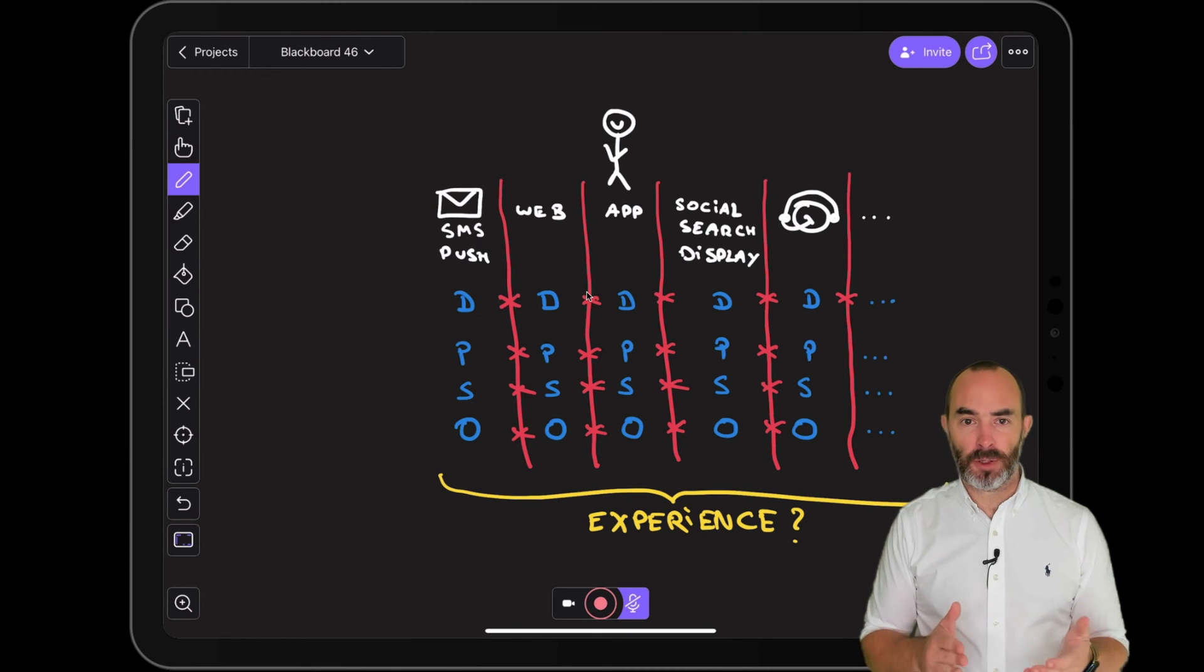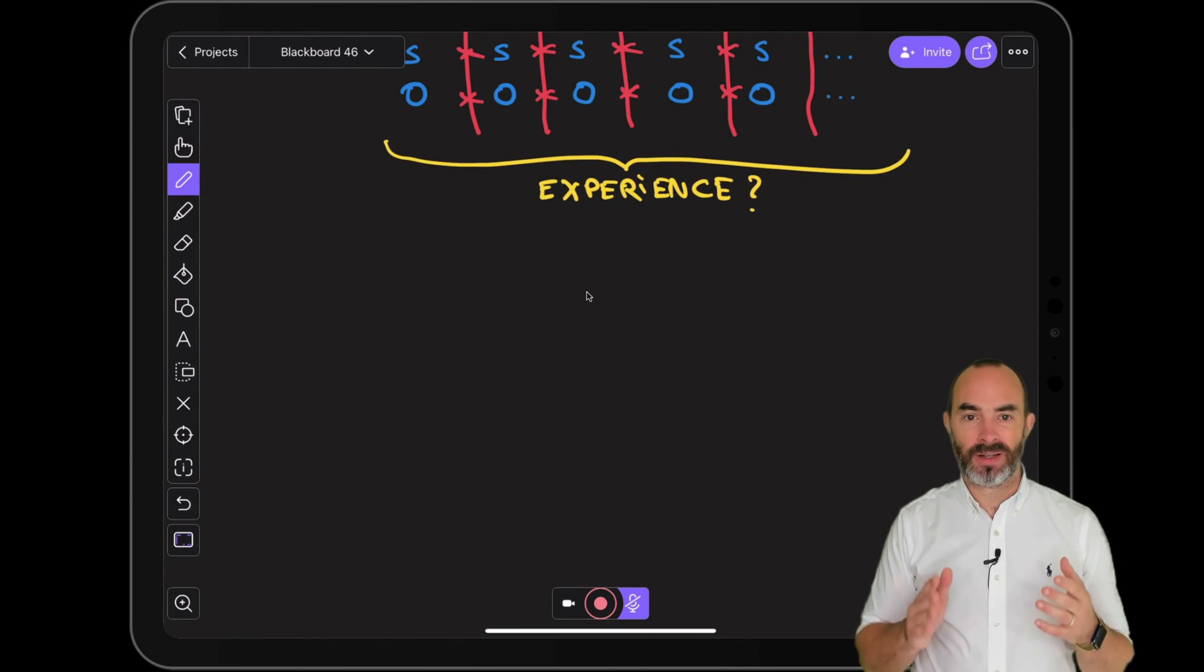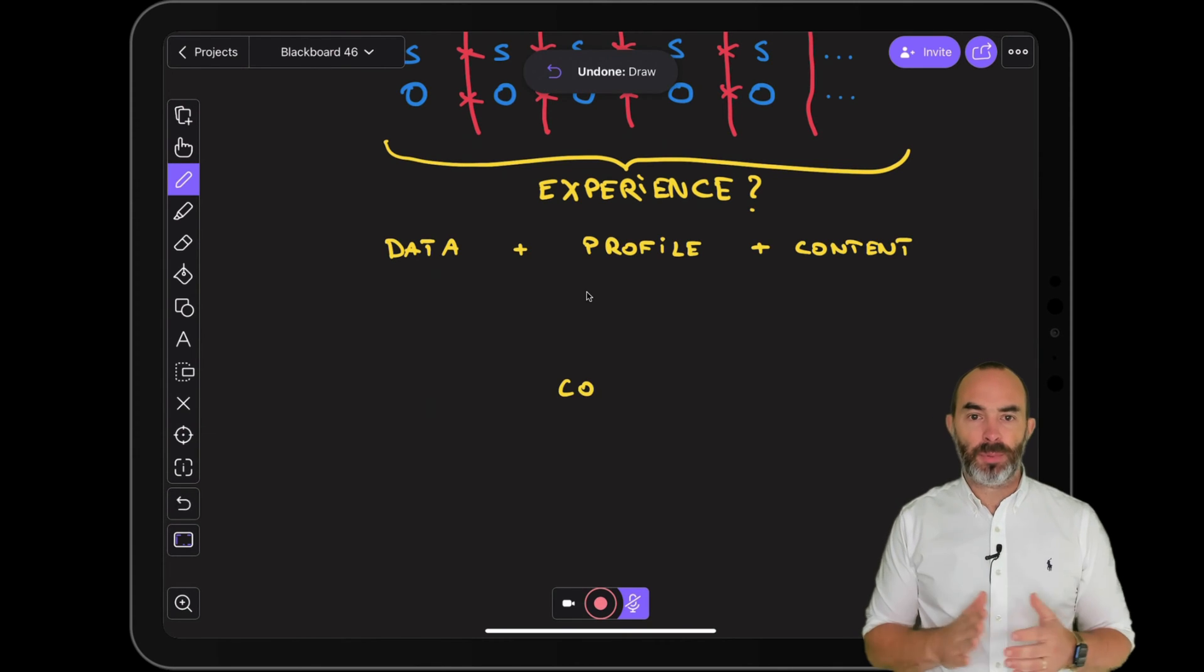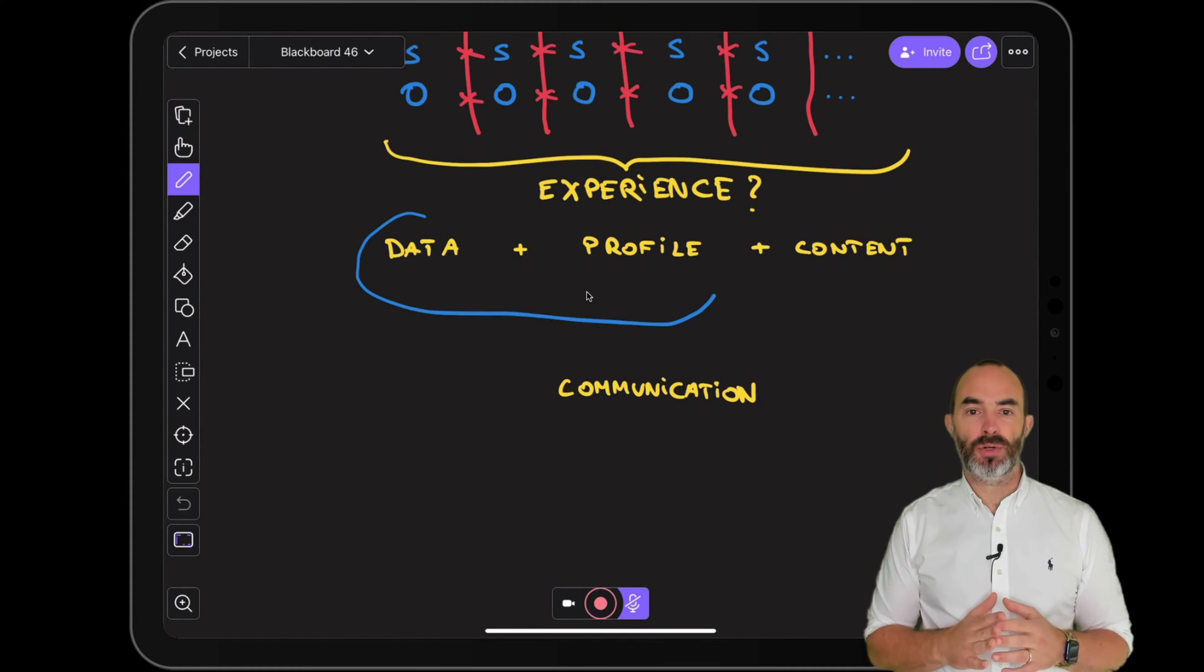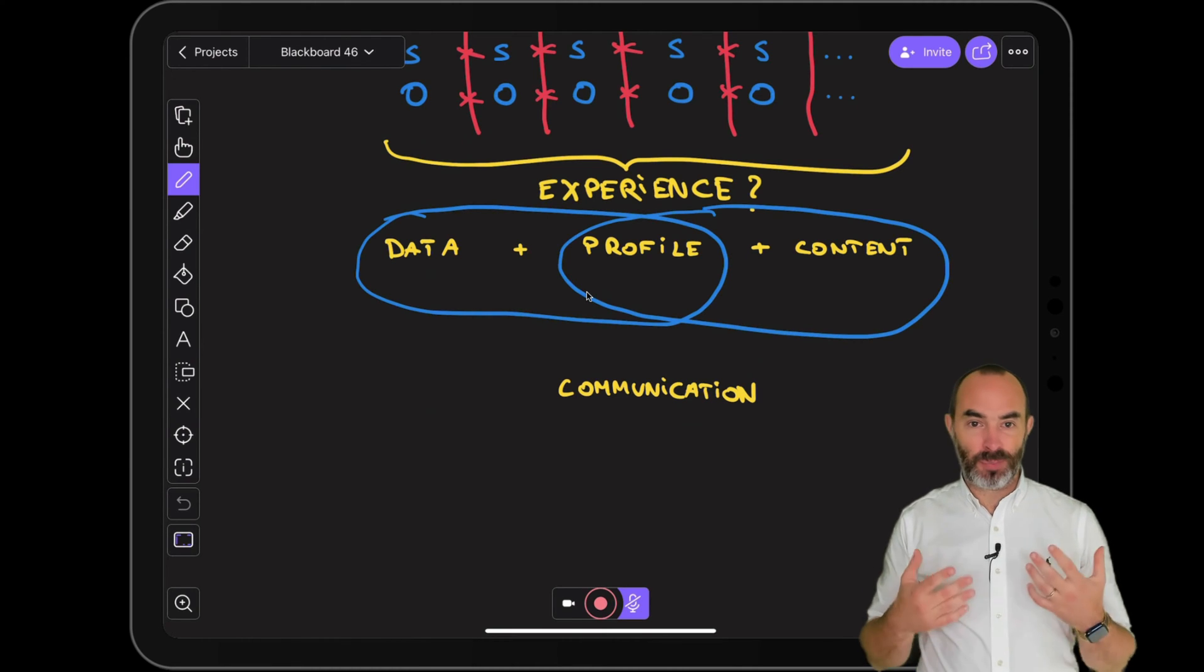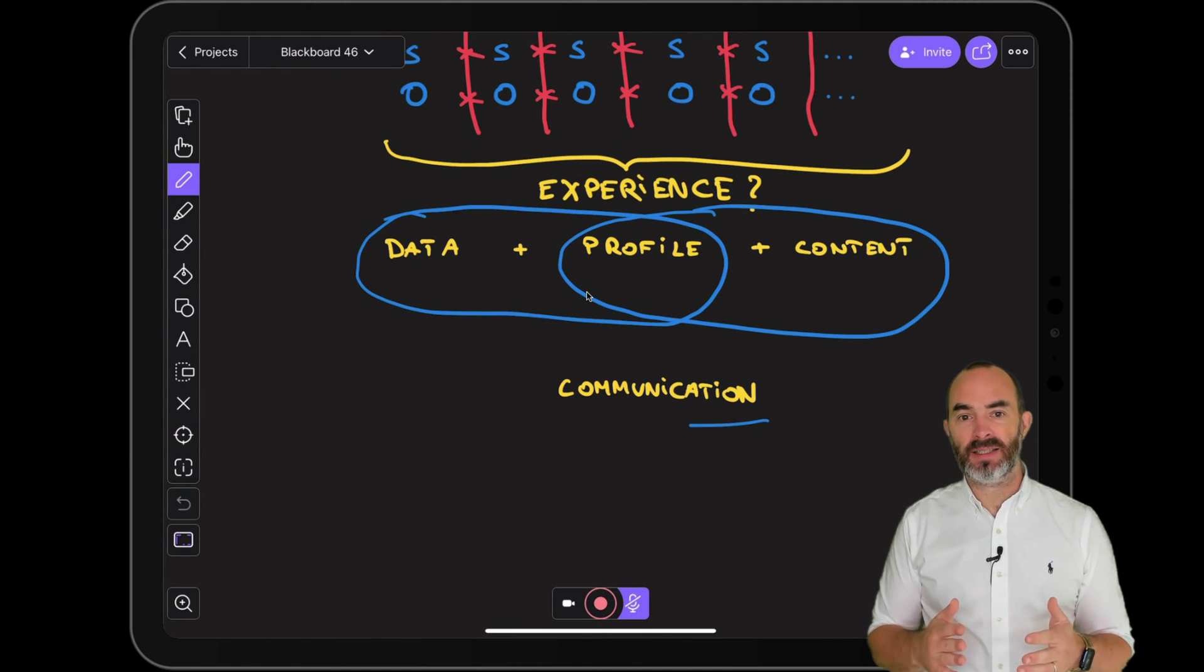Before focusing on the data governance parts let's first define the ingredients of an exceptional customer experience. The main ingredients are data, profile, content and communication. There are many point solutions available in the market that focus on data and profile. There also exist many point solutions that focus on content and profile and there are equally many point solutions that can help you optimize and deliver messages to your customers.